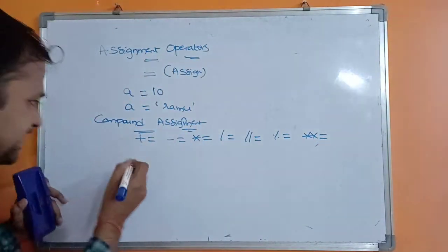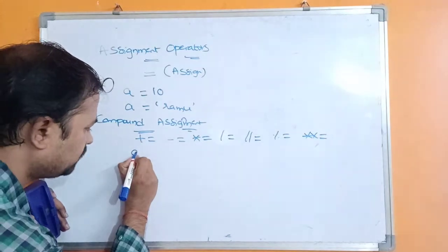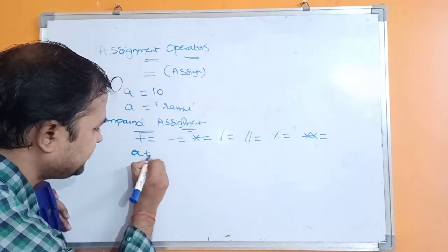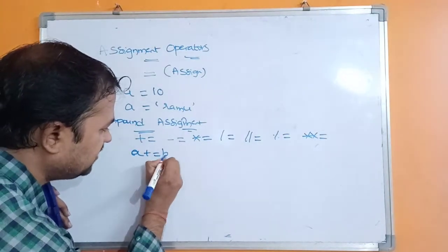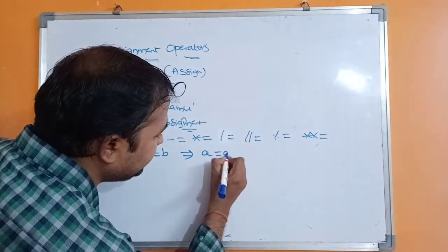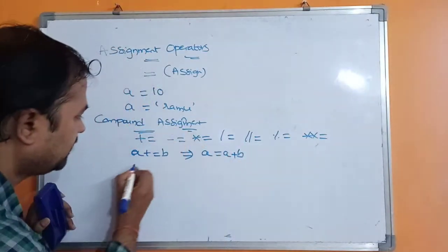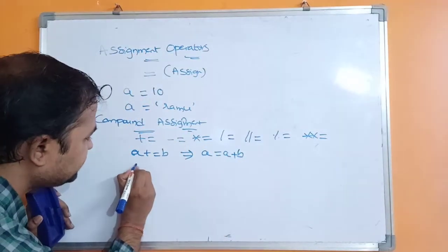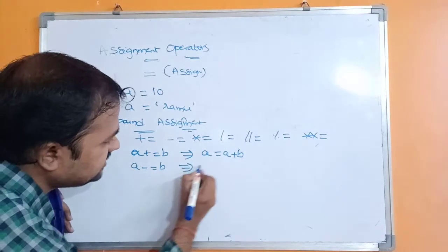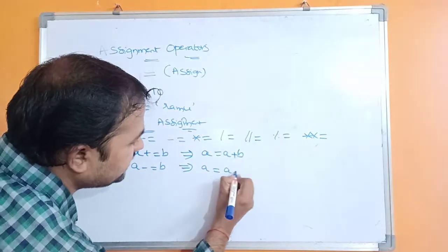Let's take the first one, that is plus-equal. If a statement is like a += b, this statement is equivalent to a = a + b. Similarly, a -= b is equivalent to a = a - b.